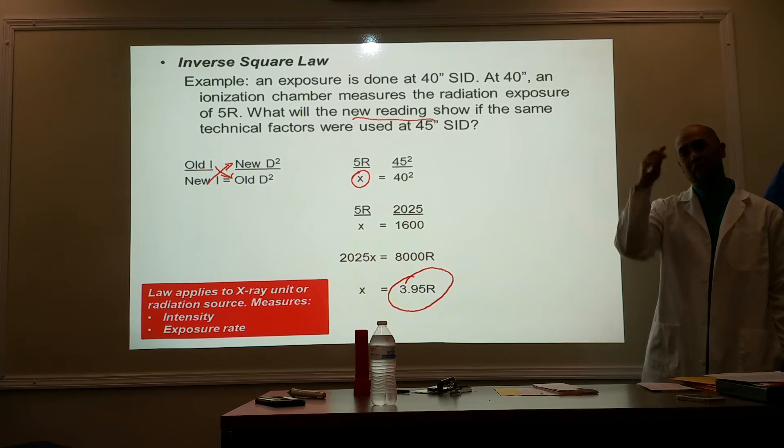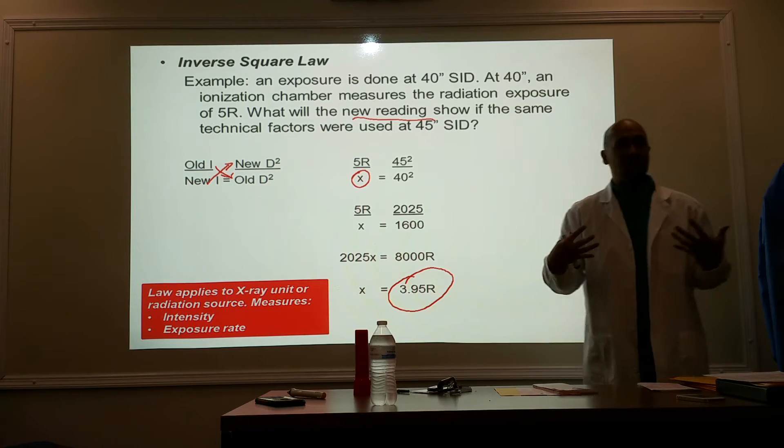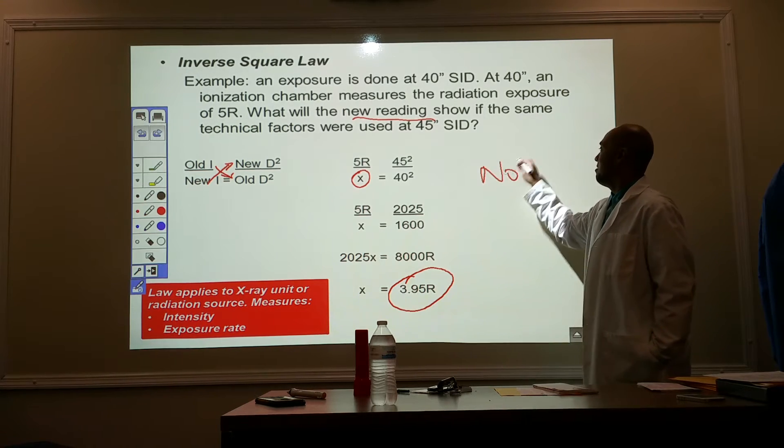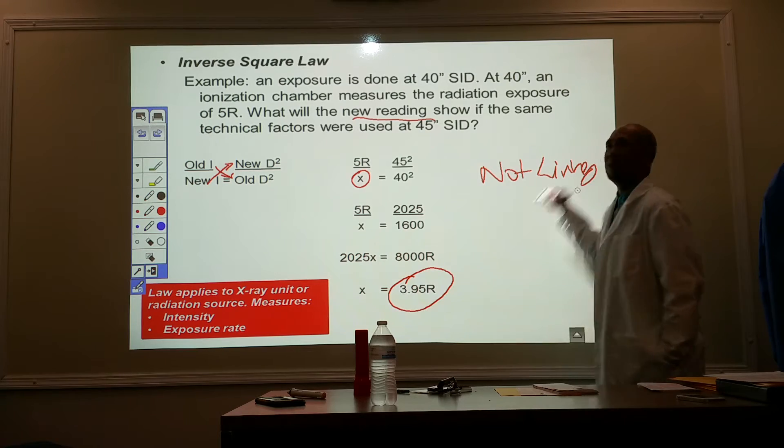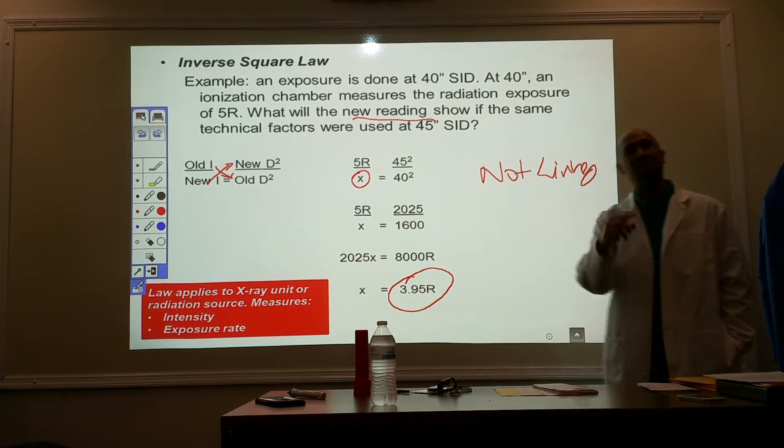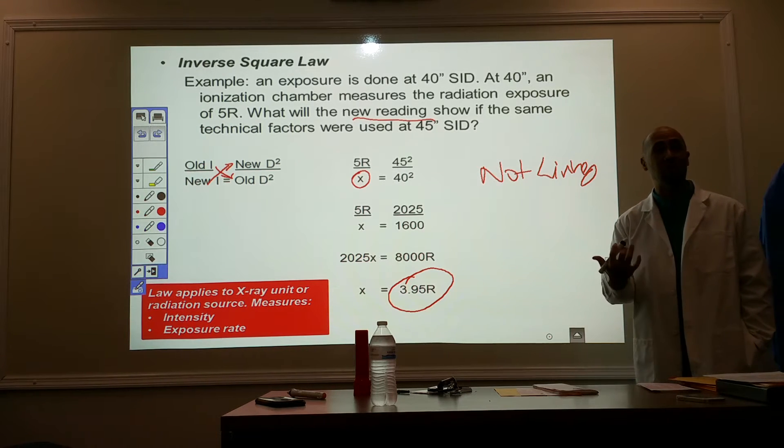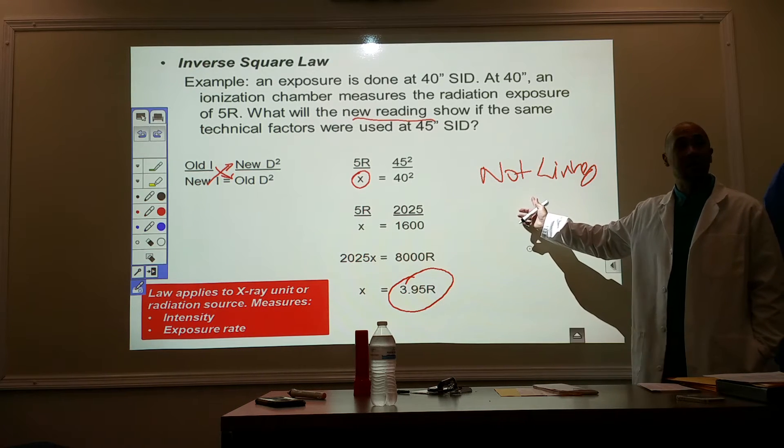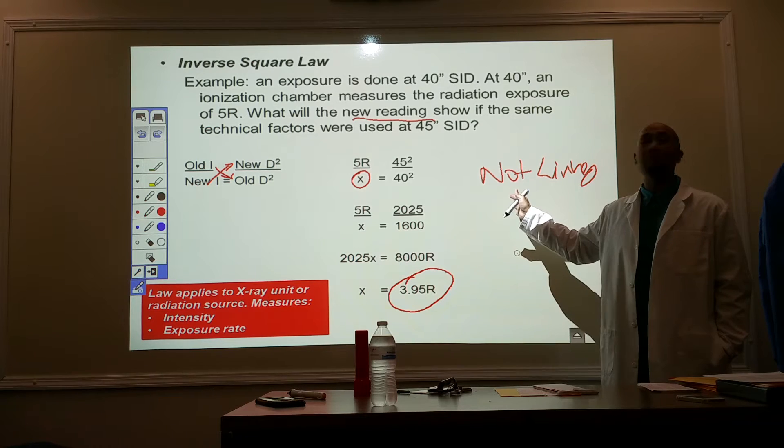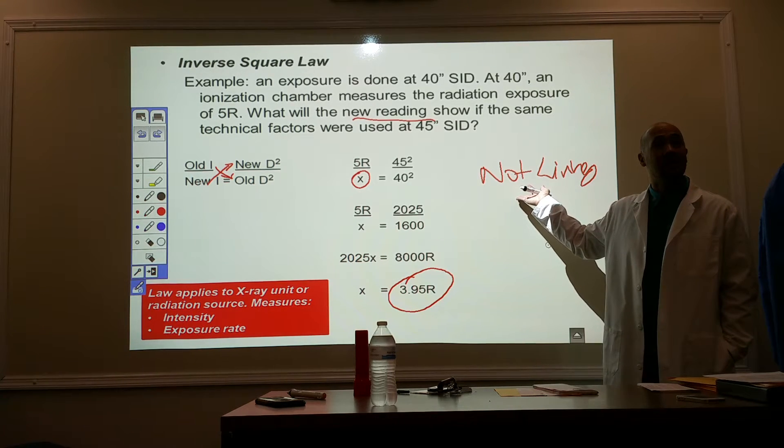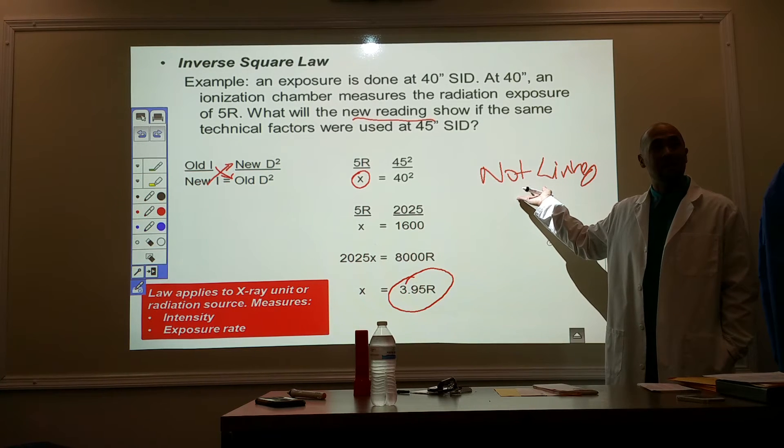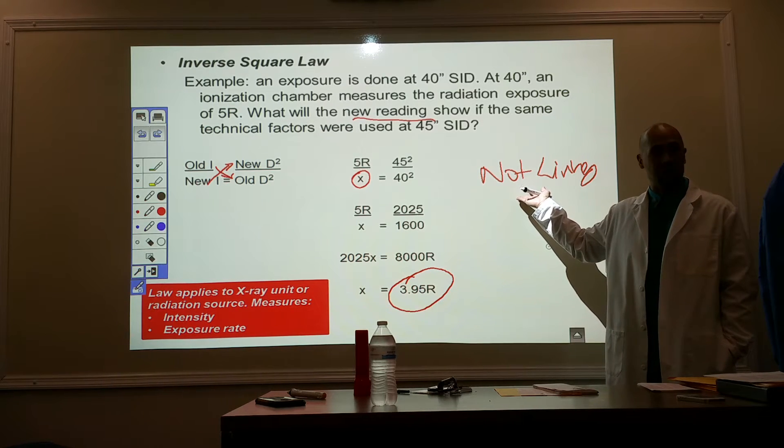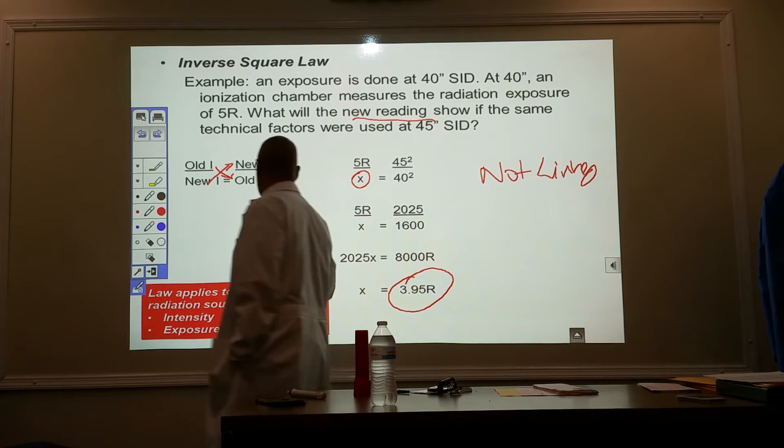What I do want you guys to tie this in with is when we're talking about the inverse square law, we are talking about things that are inanimate, something not living. Because we're talking about the intensity or the exposure rate coming from a radiation source. All we're trying to determine is the amount of exposure that radiation material is emitting. Whether it be the x-ray tube, whether it be a nuclear plant, whether it be a piece of fruit that got exposed to radioactivity. You understand what I'm saying? We're trying to determine the exposure that's coming from the radiation source. This is it right here, coming from the radiation source.